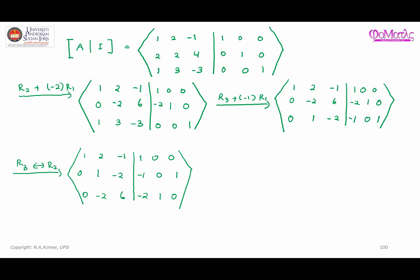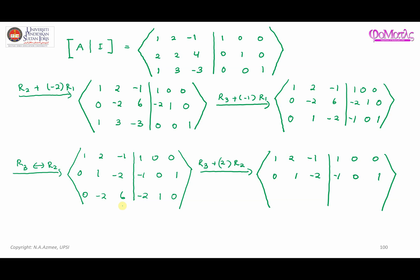What I would like to do next is to ensure this part here becomes zero. I will introduce the operation R3 plus two times R2. By doing that, rows one and two remain as they are. For the third row: 0 + 0 = 0; -2 + 2 = 0; 6 - 4 = 2. On the identity side: -2 + (-4) = ... -2, -2; 1 + 0 = 1; 0 becomes 2.